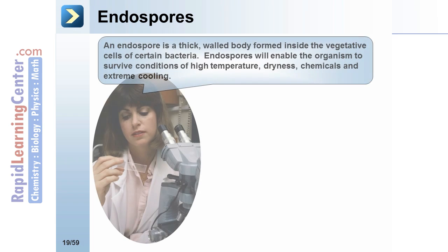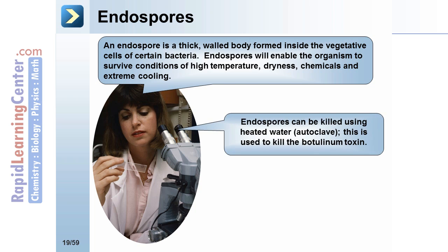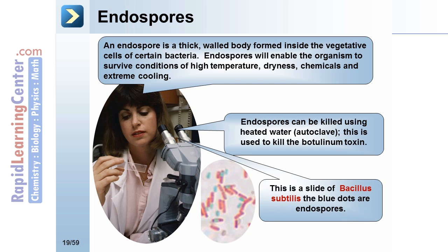Endospores. An endospore is a thick-walled body formed inside the vegetative cells of certain bacteria. Endospores enable the organism to survive conditions of high temperature, dryness, chemicals, and extreme cooling. Endospores can be killed using heated water, like in an autoclave — this is used to kill the botulinum toxin. This is a slide of Bacillus subtilis; the blue dots are endospores.